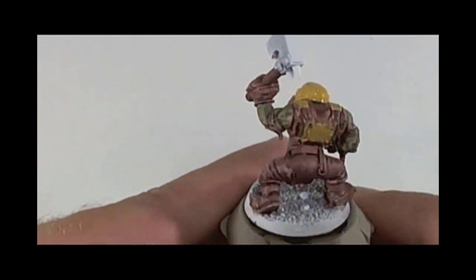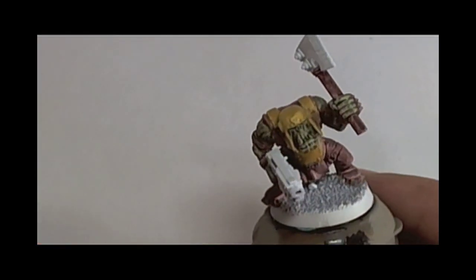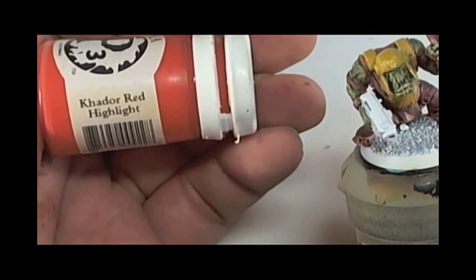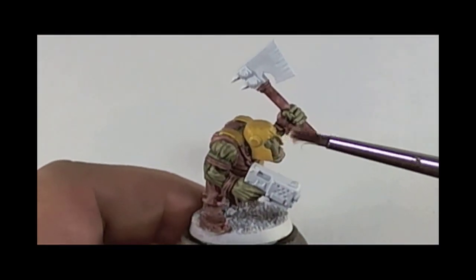So once this is done, it's up to the stippling technique for the rust using Bistro brown and Cador red highlight. You can use any type of browns and orange.